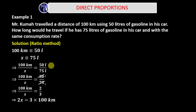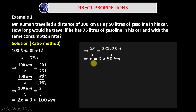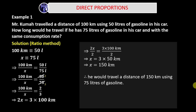Next, we cross-multiply: 2X equals 3 times 100 kilometers. Dividing both sides by 2 — it's good to divide before multiplying to keep numbers manageable without a calculator. 2X divided by 2 gives us X, and 2 into 100 gives us 50, so X equals 3 times 50 kilometers, which simplifies to X equals 150 kilometers. Therefore, he would travel a distance of 150 kilometers using 75 liters of gasoline.